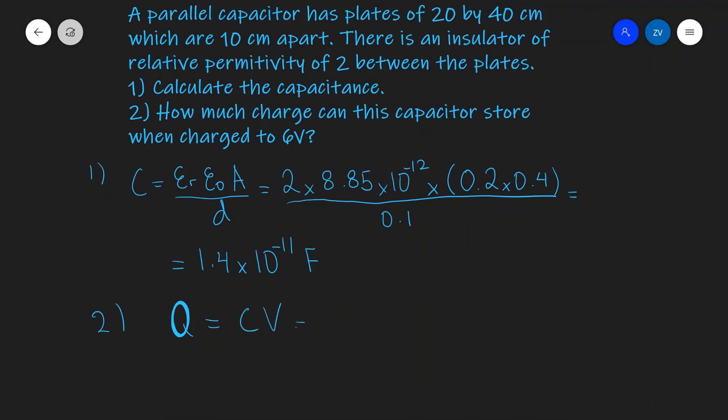So all we need to do to find the amount of charge that is stored will be to times this value by 6 which is our voltage. So 1.4 times 10 to the power of minus 11 multiplied by 6.